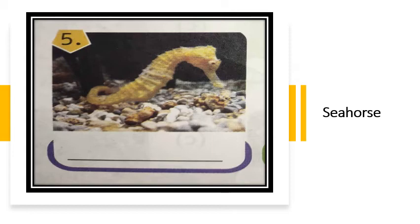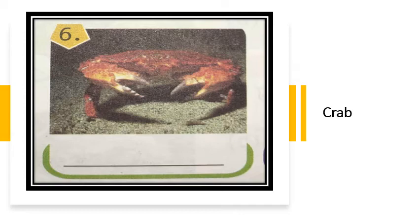Seahorse is the name of an animal which lives in water. The horse which lives on land is simply called a horse, and the seahorse lives in water. Next comes the picture of Crab. C-R-A-B. Crab lives in water. This is the picture of crab.